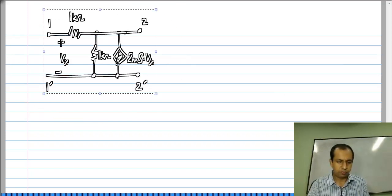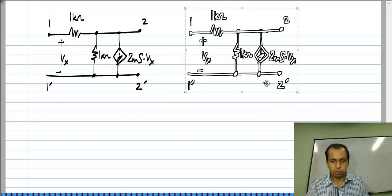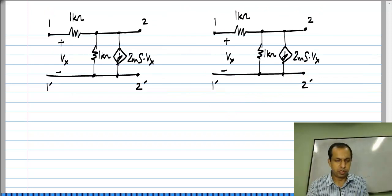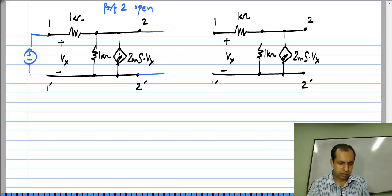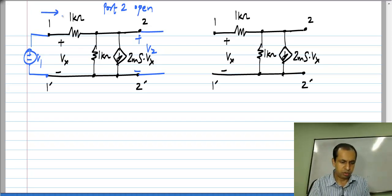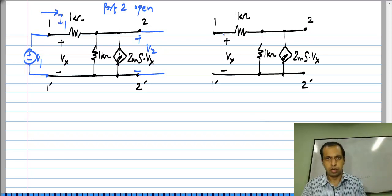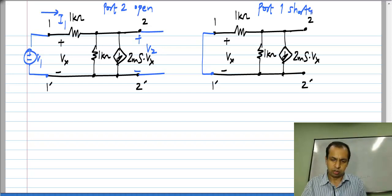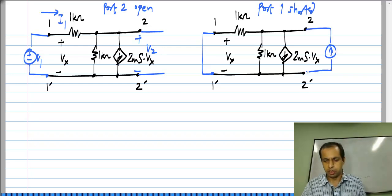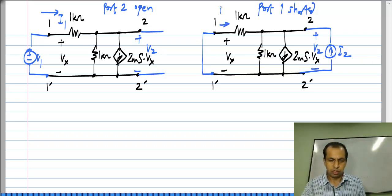So, as usual I have two port conditions for the two port parameter measurements. In one case I open circuit port 2 and apply V1, I measure V2 and I1. In the other case I have port 1 shorted, I apply I2, I measure V2 and I1.